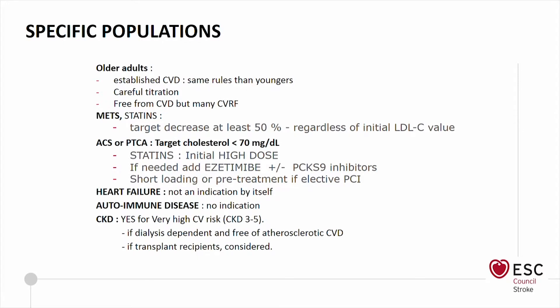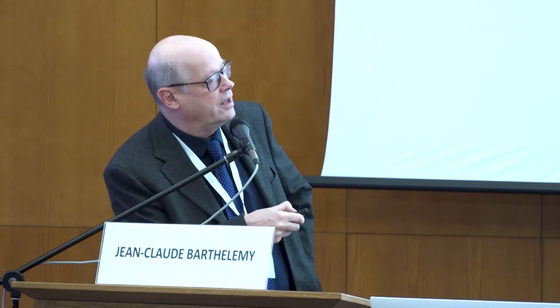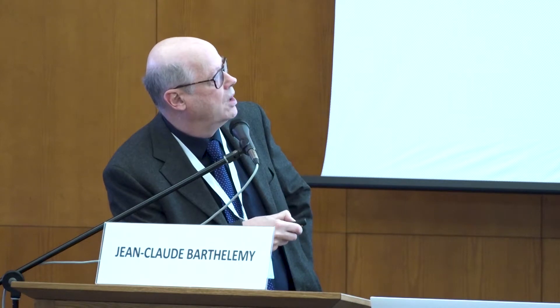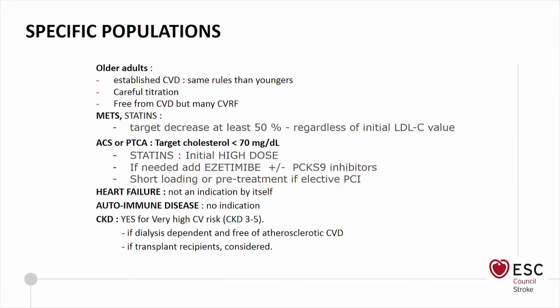Specific populations will need specific attention, such as established CVD. In metabolic syndrome, the target is to decrease LDL-C by at least 50%. Statins in ACS may need an initial high dose before the procedure if you have an elective PCI. There is no indication for heart failure or autoimmune disease. Chronic kidney disease is often associated with high cardiovascular risk and needs extensive treatment.